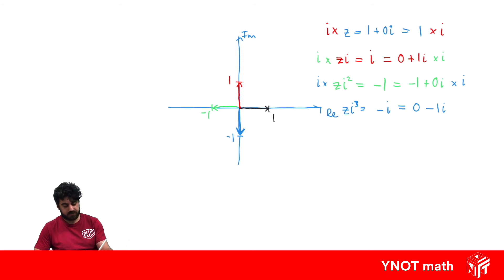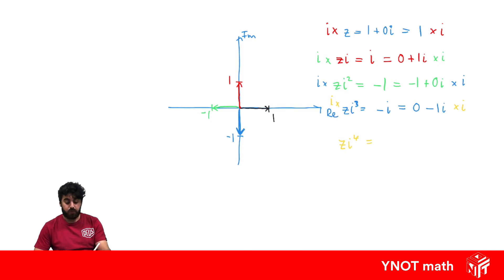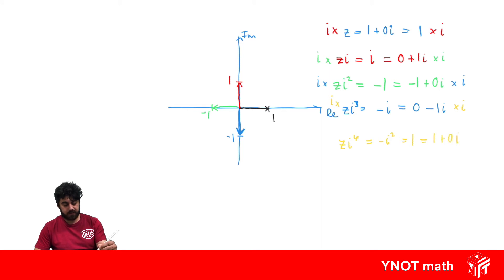Finally, let's multiply both sides by i once more. We get z times i to the 4. Now 0 times i is 0, and minus 1i times i gives us minus i squared. Since i squared is minus 1, minus times minus 1 gives us 1, equivalent to 1 plus 0i. If we plot that, we're back over here going to 1.